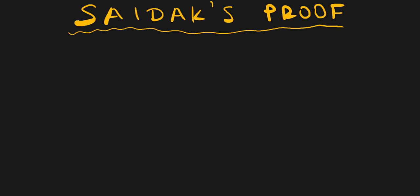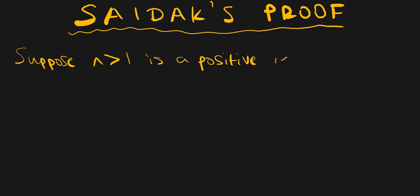The first thing I'm going to do is assume that n is a positive integer not equal to one. So suppose n greater than one is a positive integer — a positive whole number which is not equal to one. We're not including one in our definition of n.